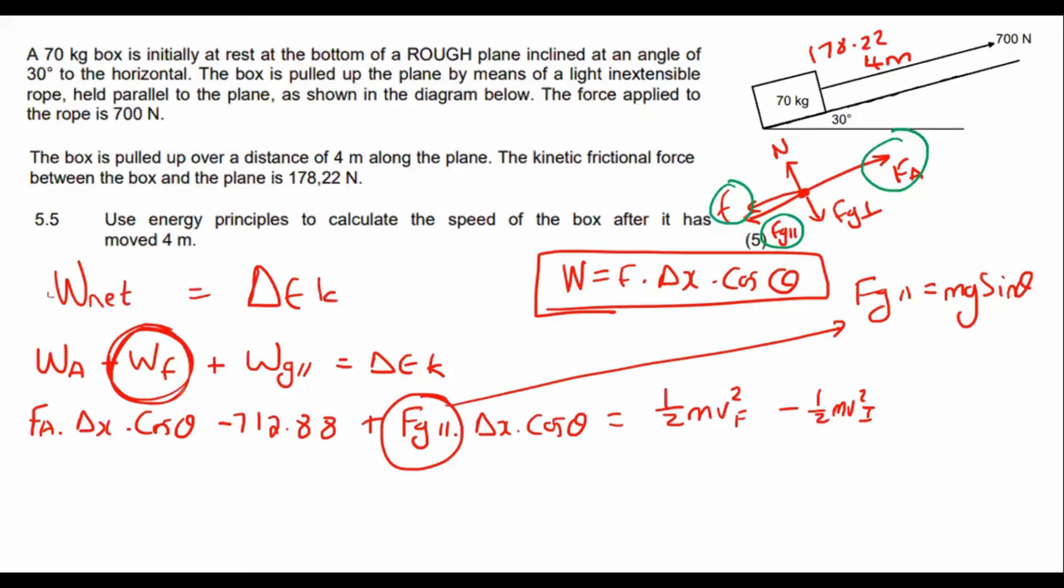OK, now we just go full everything in. It's going to get fun. So we say 700 times by the distance, which is 4 meters. Now, this object is going up the slope and the applied force is also going up the slope. So that'll be cos zero. Minus 712.88 plus FG parallel. So the mass is 70. Gravity is 9.8. Sin of 30 degrees. That's only this part over here. OK, then I carry on with the distance, which is 4 meters. And now if we look at our free body diagram, we're going in this direction, but parallels acting backwards. So that would be another cos 180. Cos 180.